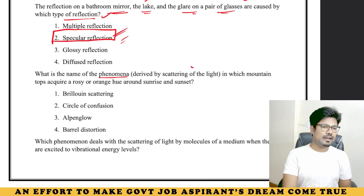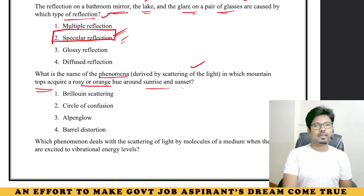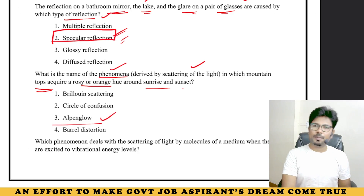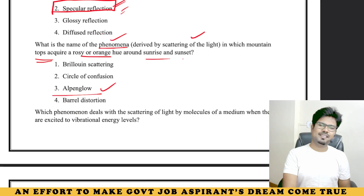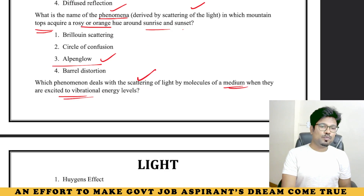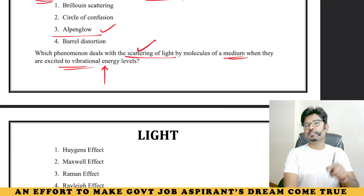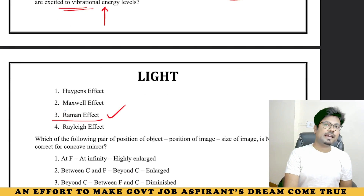The phenomenon in which mountain tops acquire a rosy orange hue around sunrise and sunset is called Alpenglow. At sunset and sunrise, mountains appear orange in color due to this Alpenglow phenomenon. Which phenomenon deals with scattering of light by molecules of a medium when they are excited to vibrational energy levels? This is from NCERT. The answer is the Raman scattering effect.